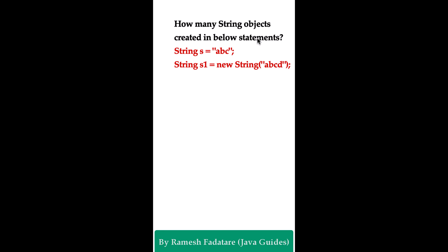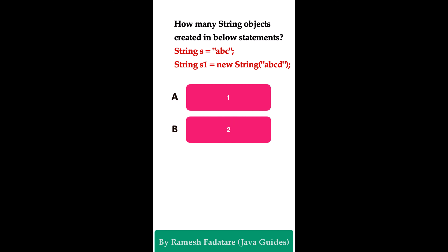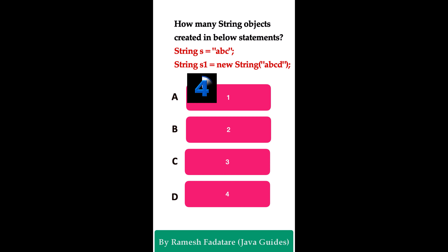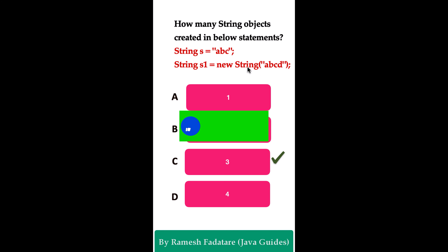How many String objects are created in the following statements: String s = "abc"; String s = new String("abcd")? Option A: one. Option B: two. Option C: three. Option D: four. The correct answer is three. The first statement creates one String object "abc" in the string constant pool if it doesn't already exist. The second statement has the "abcd" string literal created in the string constant pool, and new String() creates an additional object in heap memory — totaling three objects.